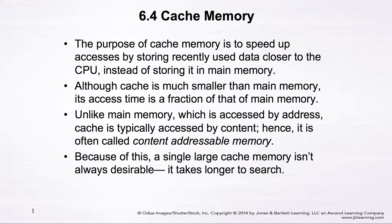In this video we talk about cache memory. The purpose of cache memory is to speed up accesses by storing recently used data closer to the CPU, instead of storing it in the main memory. Every time the CPU wants to access data, it goes to the cache memory and can retrieve information quickly, compared with the case when we store information in the main memory. Although the cache is much smaller compared with the main memory, the benefit is significant.